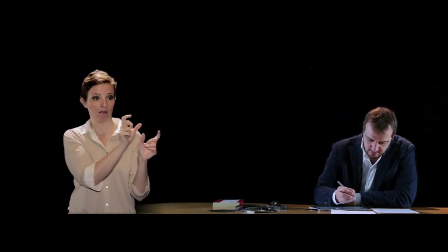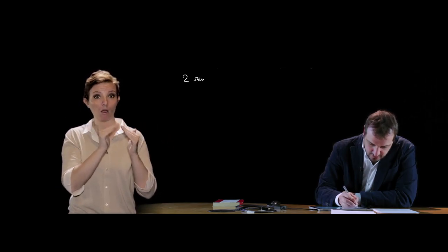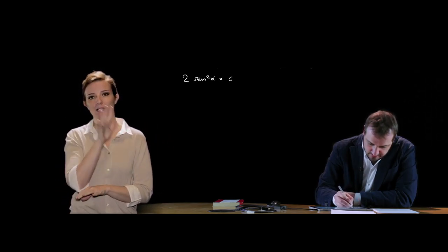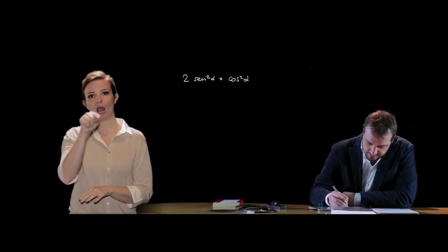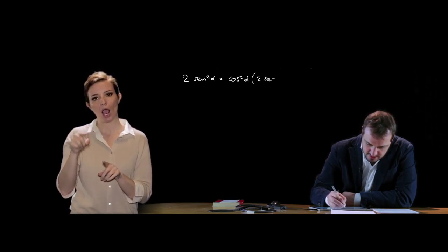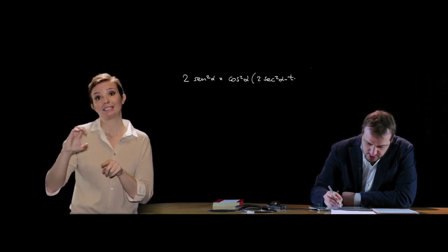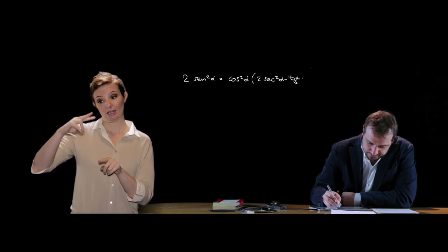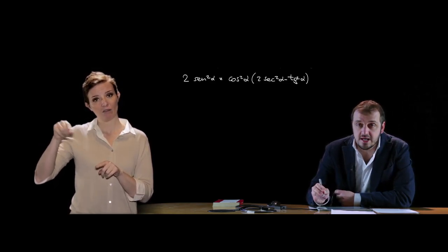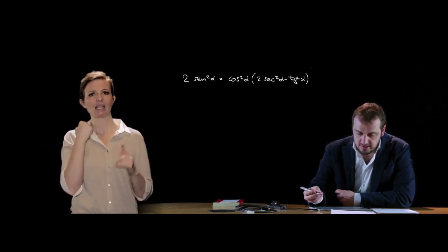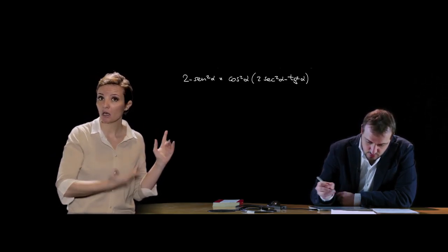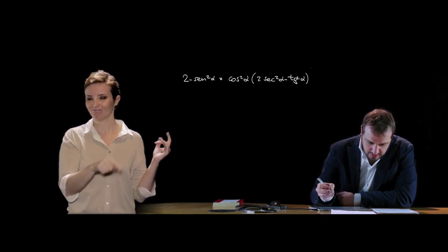Andiamo a fare un esempio: 2 sen² α = cos² α · (2 sec² α − tan² α). Ci si chiede se questa uguaglianza sia effettivamente un'identità oppure no.